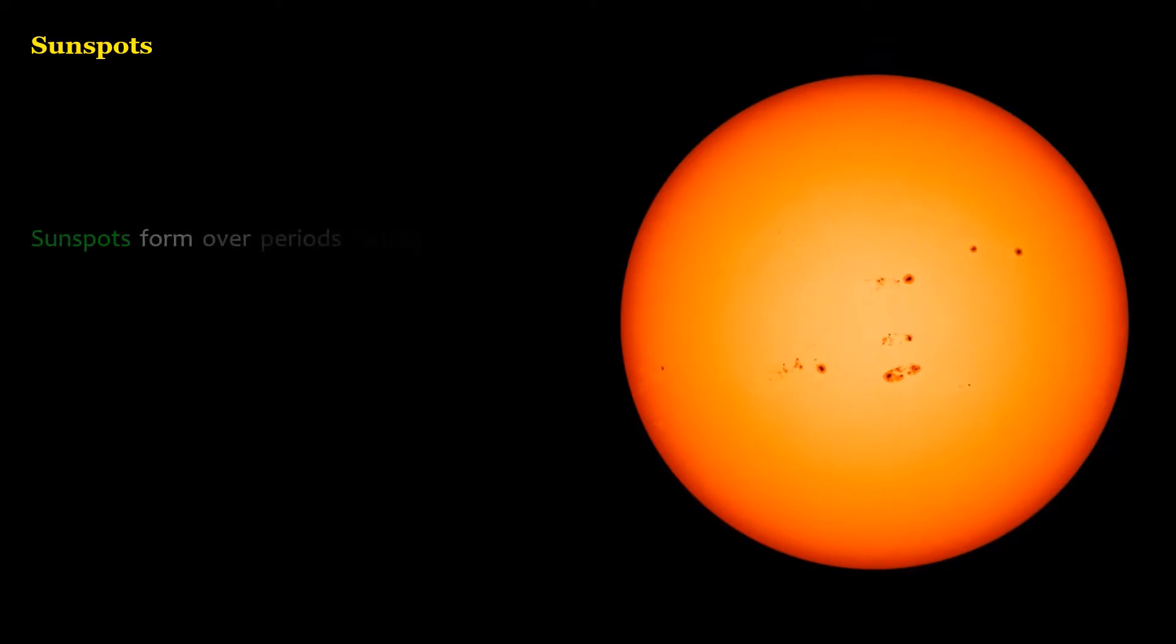Sunspots form over periods lasting from days to weeks, and can persist for weeks and even months before erupting or dissipating.